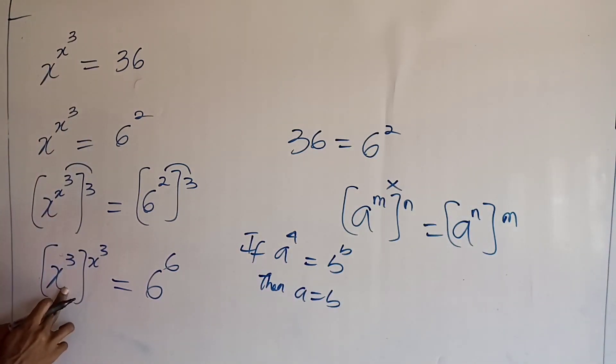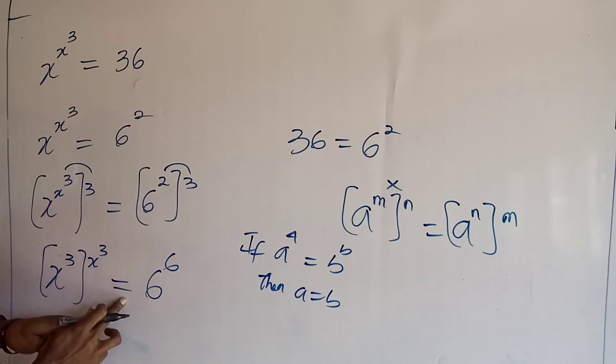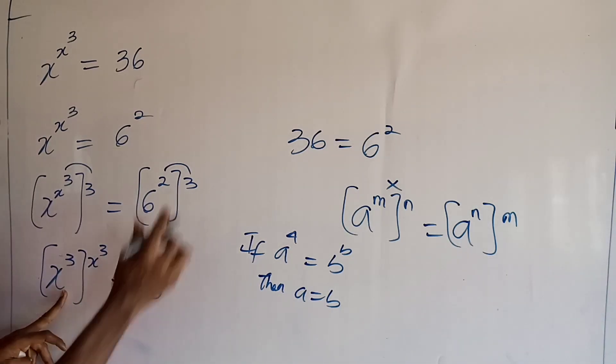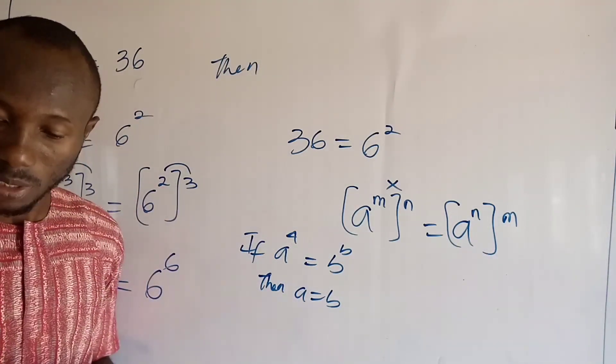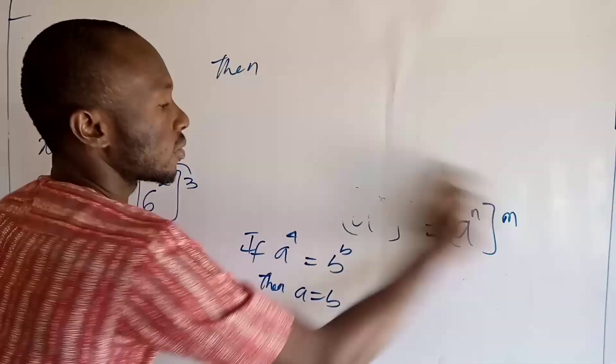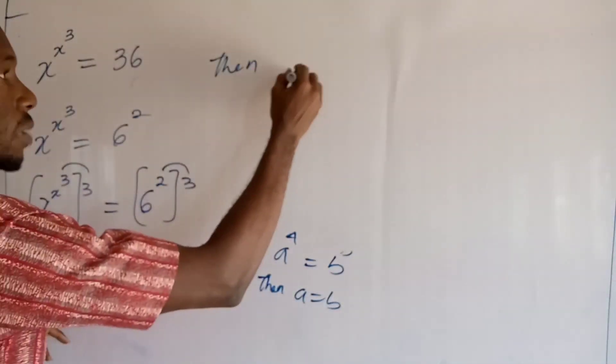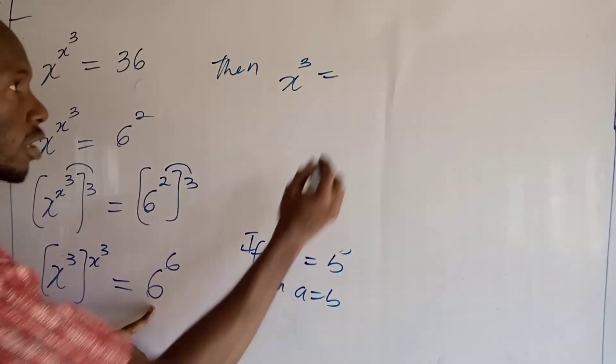So you can see that this raised to itself is equal to this raised to itself. Then this must equal this. So by this condition, it means that x^3 must be equal to 6.